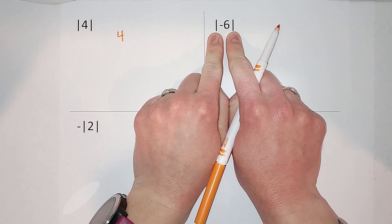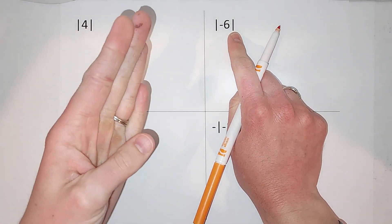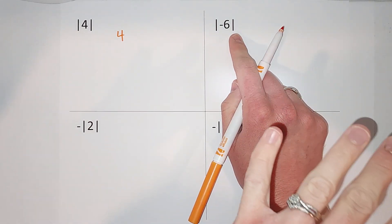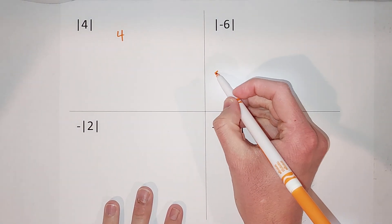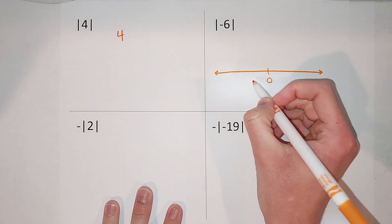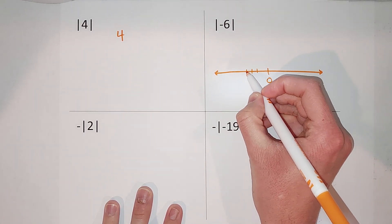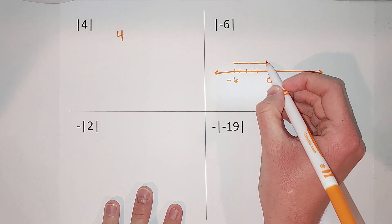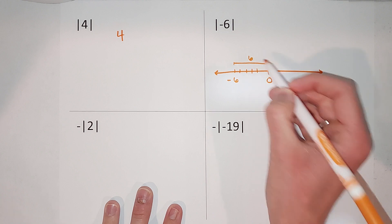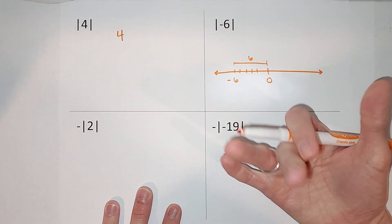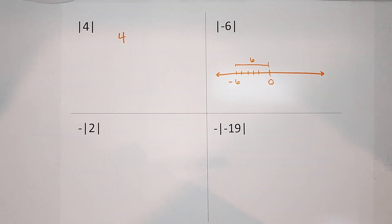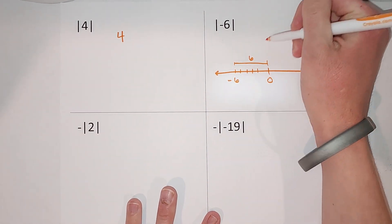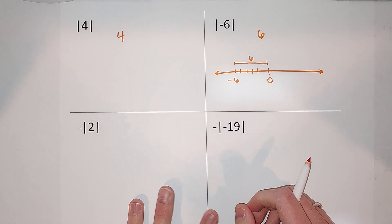Next one: negative six. These two bars — absolute value — are asking how many units is negative six from zero. We could draw a number line: here's zero, one, two, three, four, five, negative six. The distance is six. It's not negative six — you can't walk negative six miles — so the distance is six. That's why it's always positive.